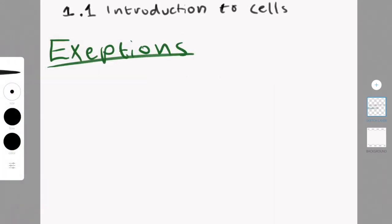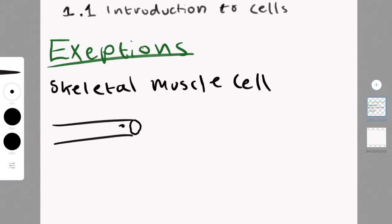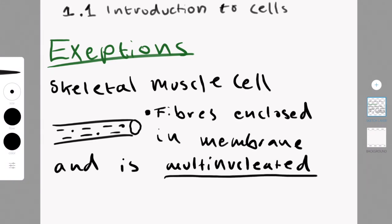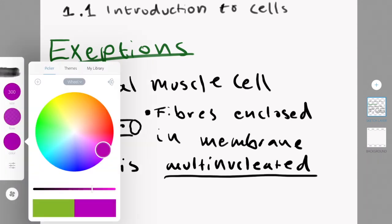And now that I've presented you with essentially the rules of what a cell is and how cells act, I am here to show you all of the exceptions, because of course there are exceptions. The first example is the skeletal muscle cell. This cell has fibers in it, and the fibers are enclosed in a membrane, and this cell is multinucleated, which essentially means that there are multiple nuclei within the cytoplasm. This is obviously not typical, because most cells are not multinucleated.